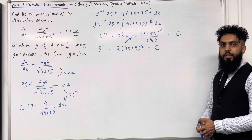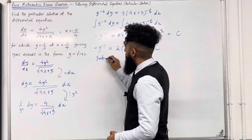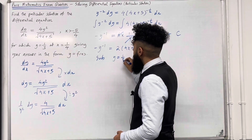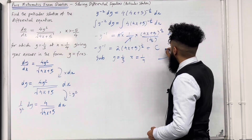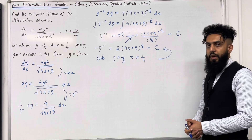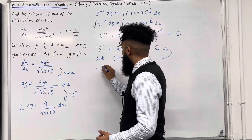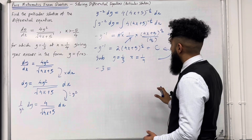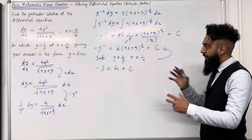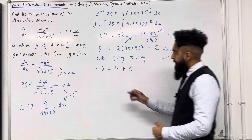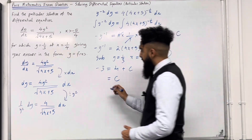To work out the constant of integration c, I'm going to substitute y equal 1 third and x equal 1 quarter into this equation. The left-hand side becomes minus 3, and the right-hand side becomes 4 plus c. Rearranging to find c: c equals minus 3 minus 4, which is minus 7.